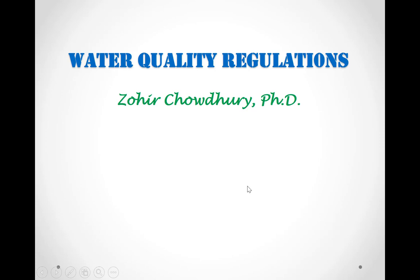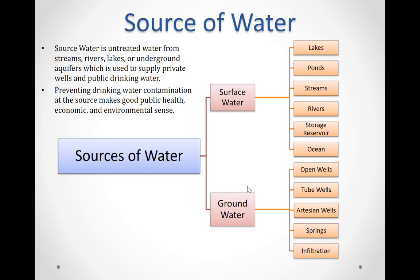Hello everybody, my name is Zohit Chodri and today we'll talk about water quality regulations. Source water is untreated water from streams, rivers, lakes, or underground aquifers, which is used to supply private wells and public drinking water. Preventing drinking water contamination at the source makes good public health, economic, and environmental sense.